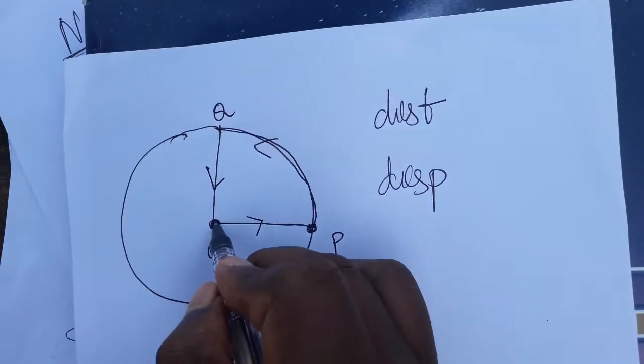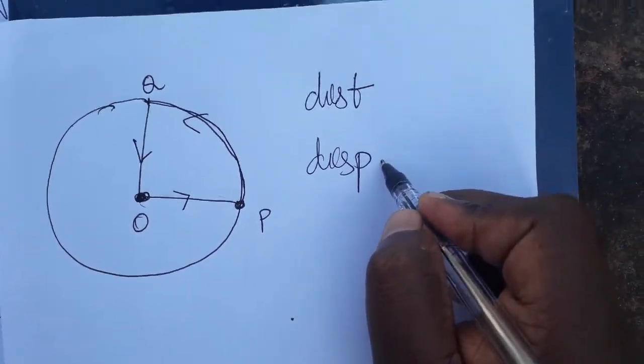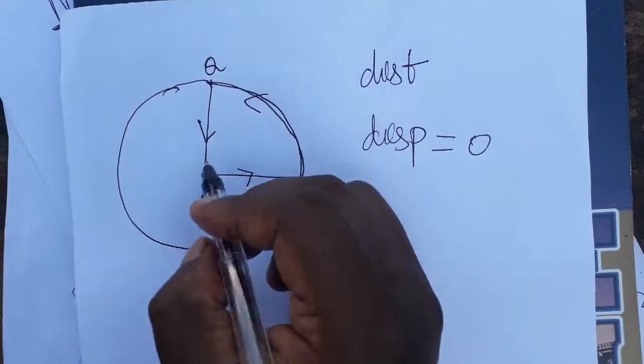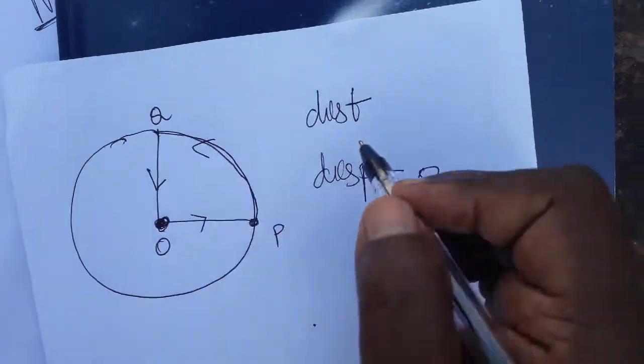What is displacement? Displacement, as we know, is the shortest distance between starting and ending points. Here it will be zero because the object started and ended at the same point.